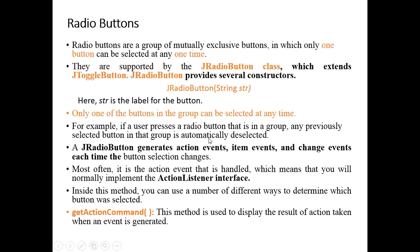If the user presses a radio button in a group, any previously selected button in that group is automatically deselected. For example, if you have four options and you first select the first one but then select the last option, the first option is deselected. JRadioButton generates ActionEvent, ItemEvent, and ChangeEvent each time the button selection changes.